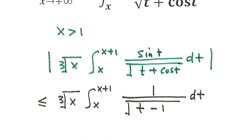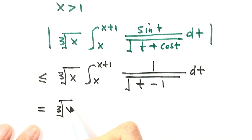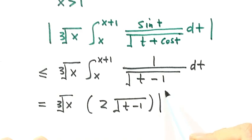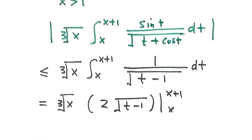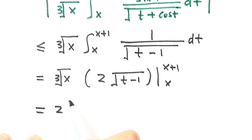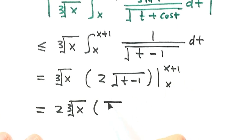Now the question is how to evaluate the integral of this part. Because the antiderivative of 1 over the square root of t minus 1 is just 2 times the square root of t minus 1. Then evaluating at the upper and lower bounds: take 2 outside, giving 2 times the third root of x, then plug in the upper bound to get square root of x plus 1, and the lower bound to get square root of x minus 1.